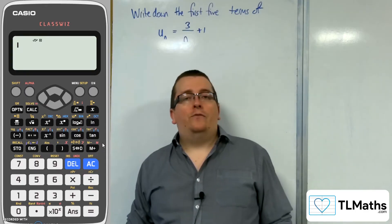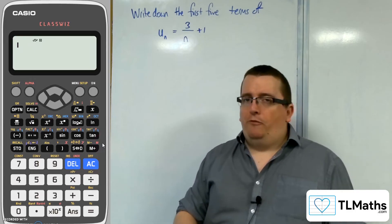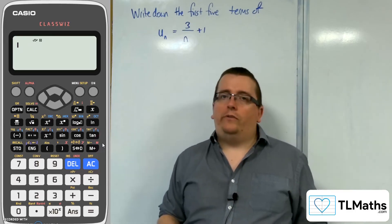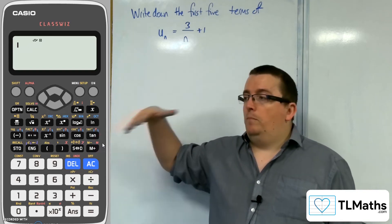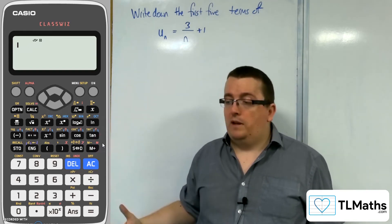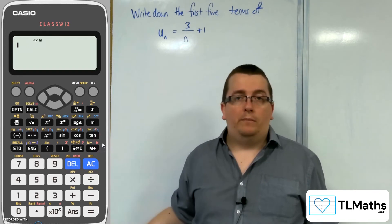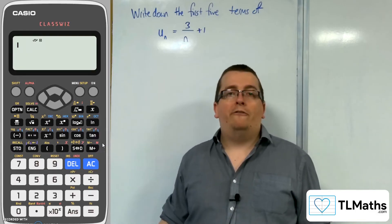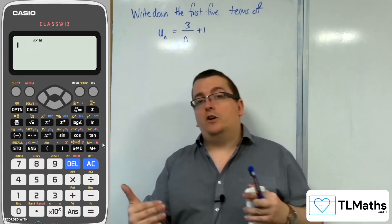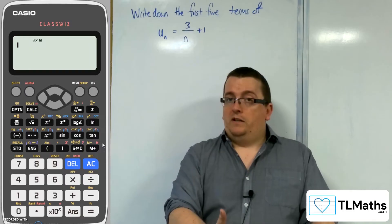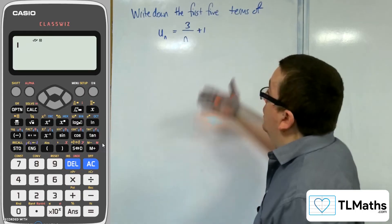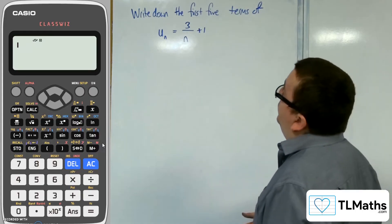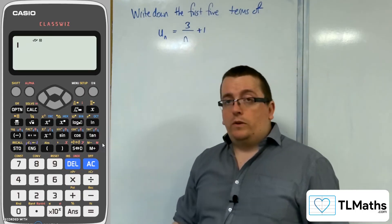For number 5, I'm going to look at the table function. The table function has loads of different uses. One possible use is that maybe someone thinks they found a formula that will generate prime numbers and you need to find an example where it fails. You can use the table function, put in the formula, generate some values, find the one that doesn't work.